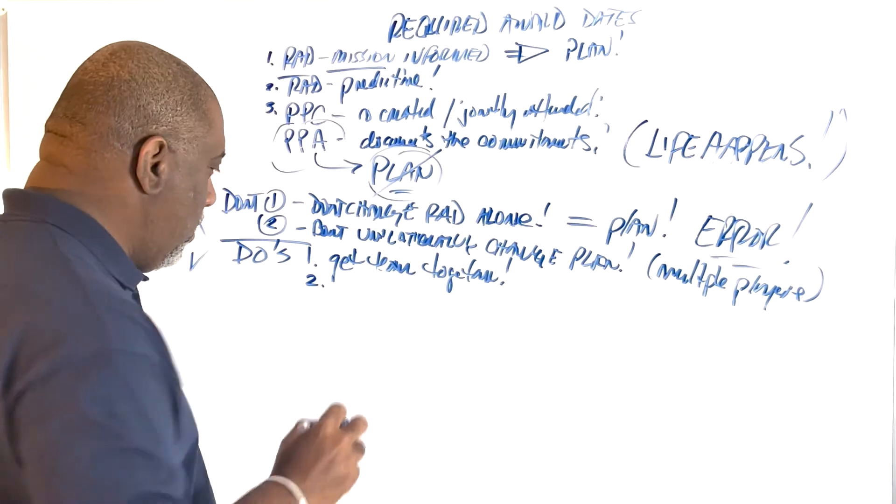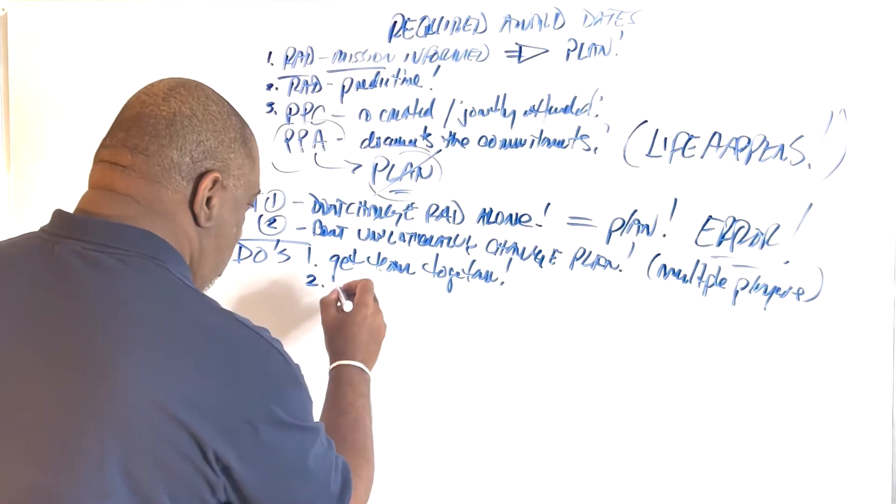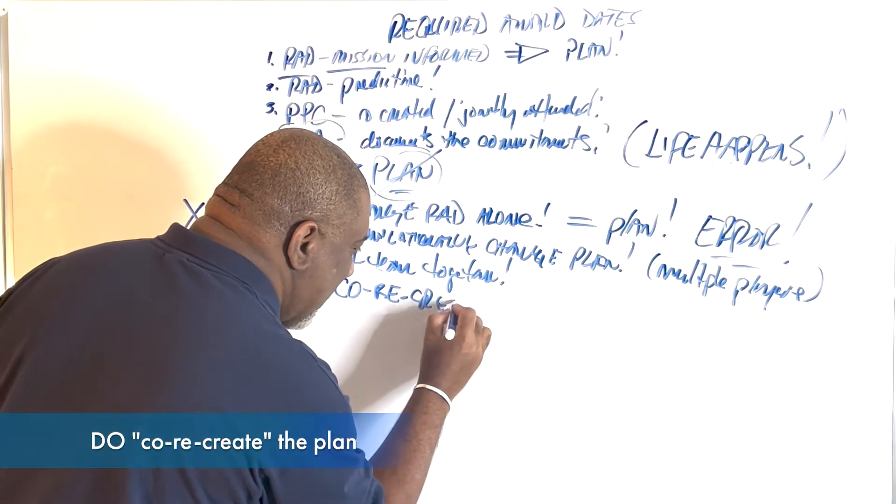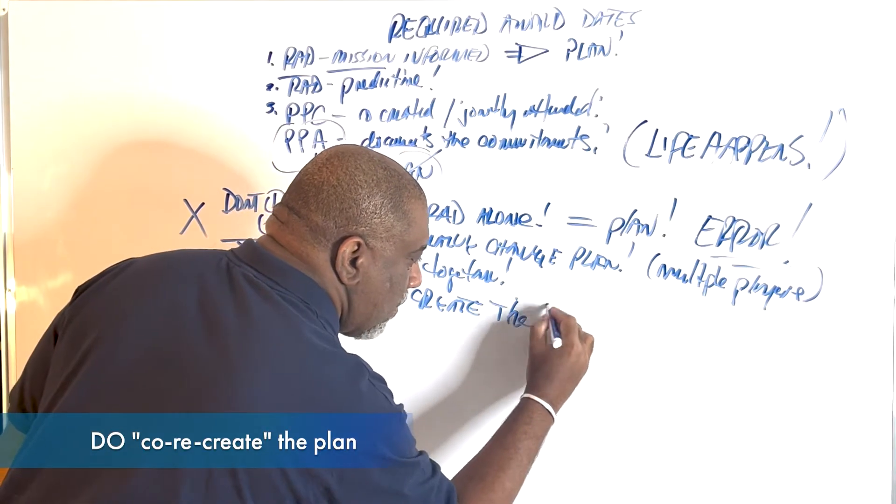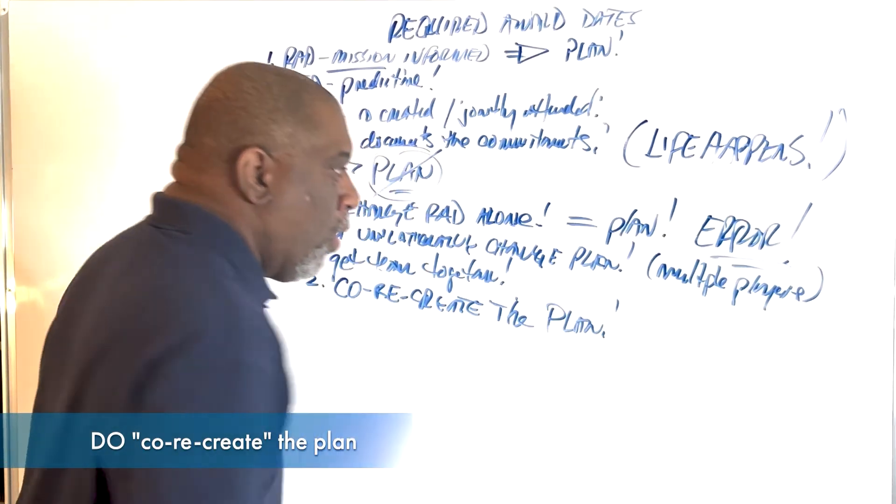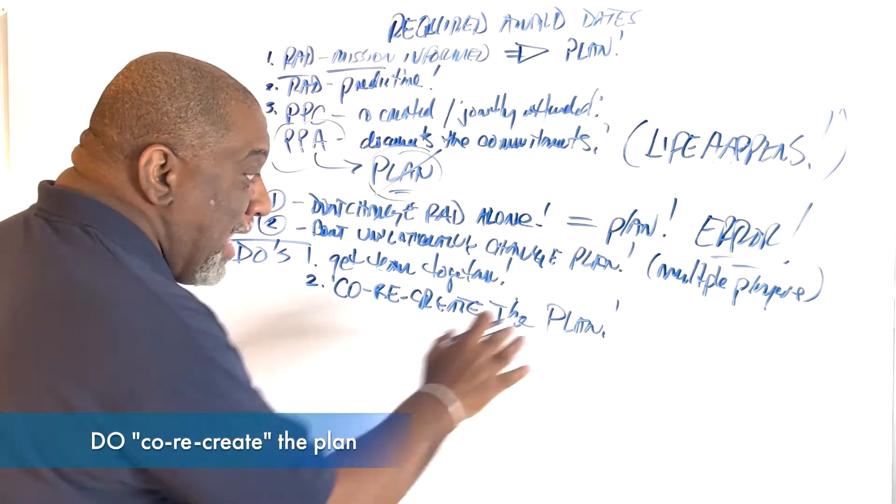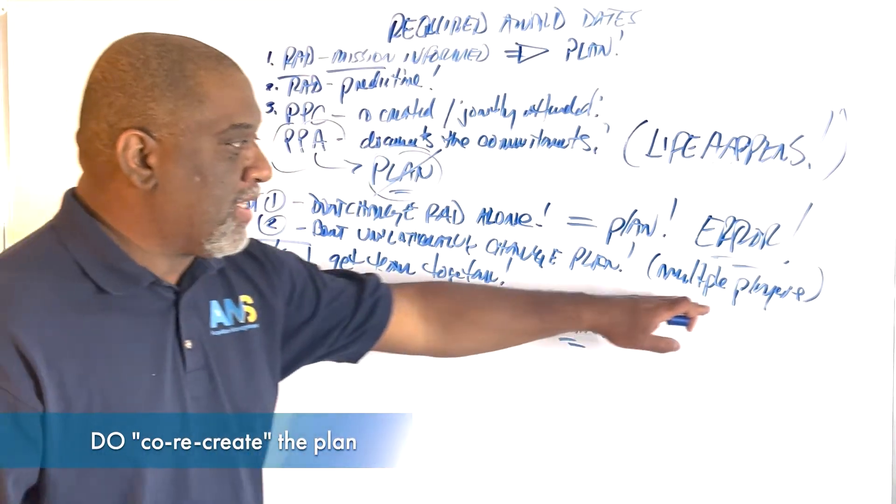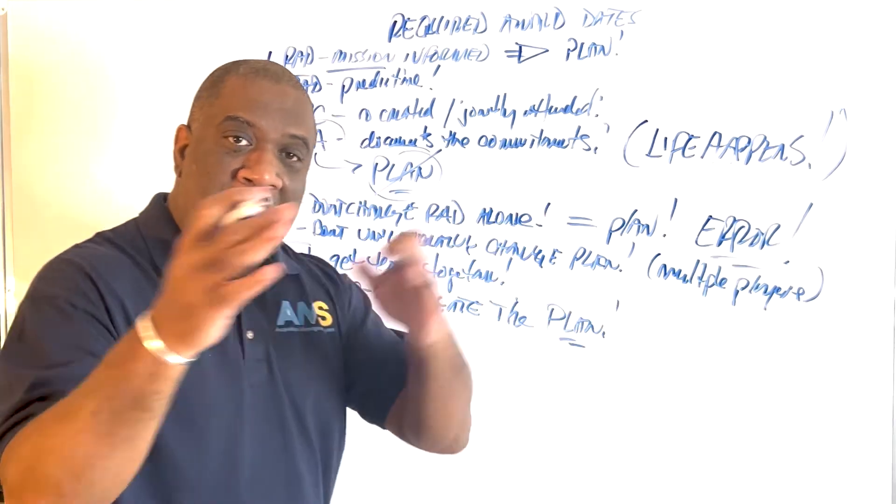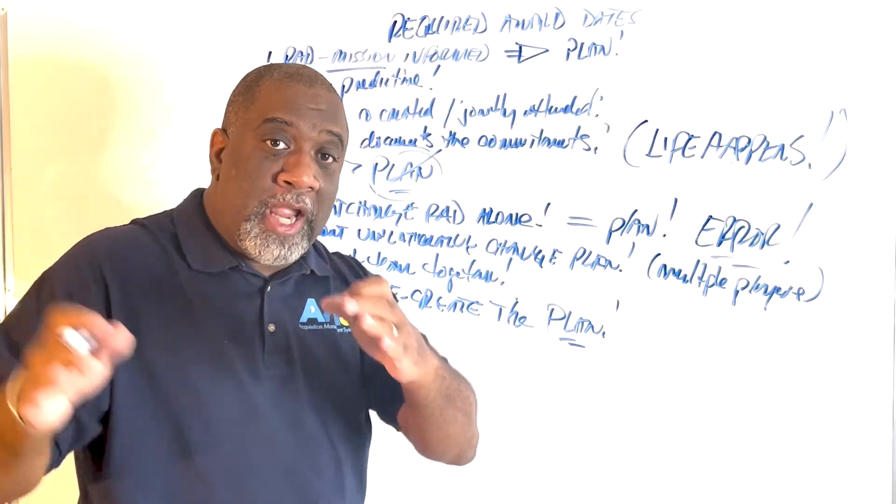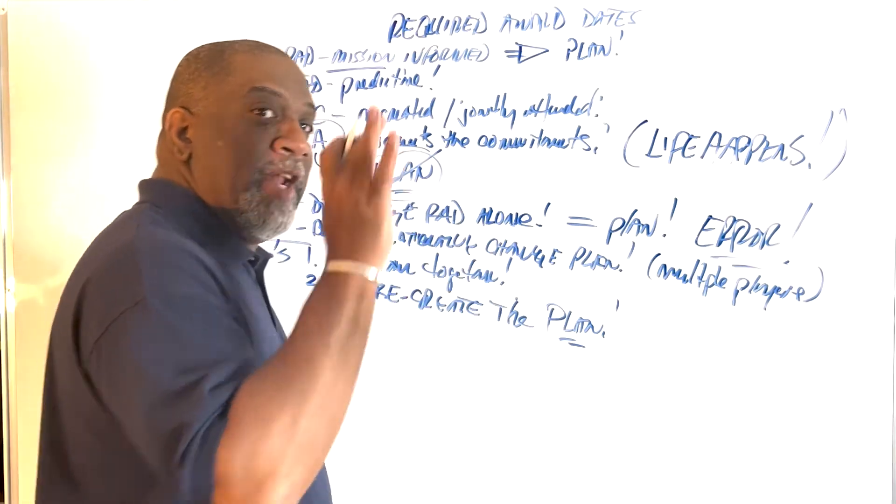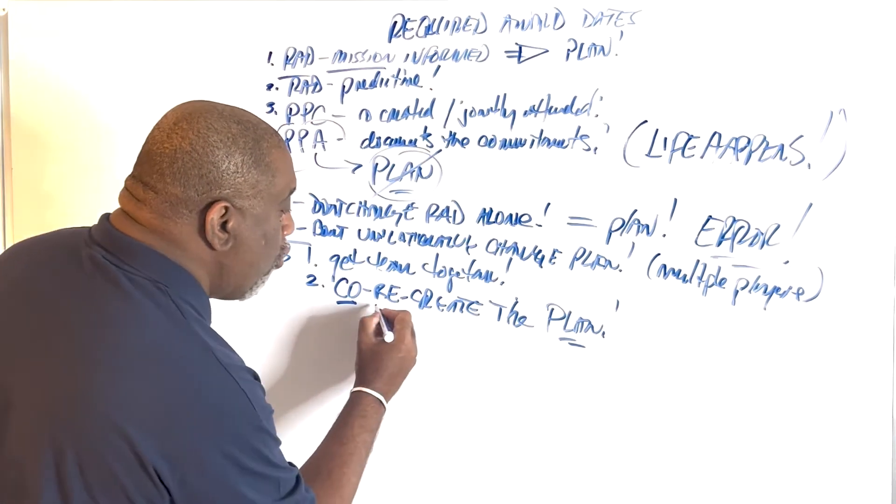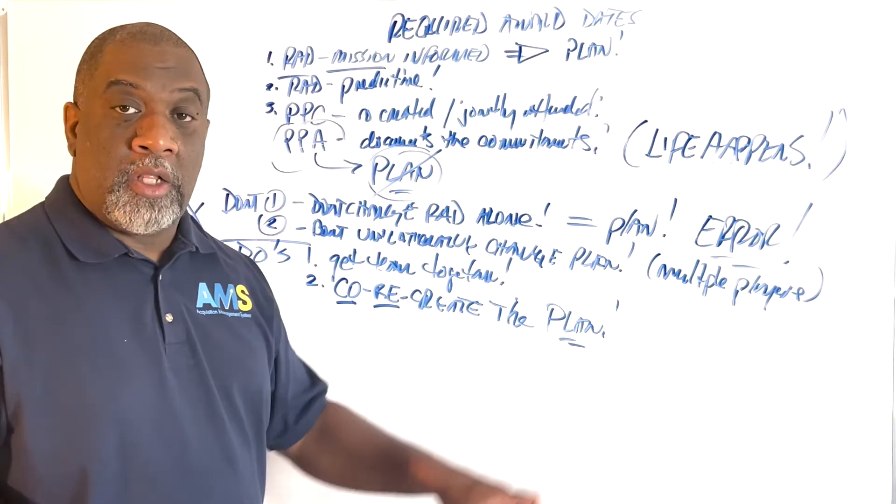Number two, I'm going to create a word for you, co-re-create the plan. Whatever adaptations that need to happen to the plan, because it's multiple players, multiple lines of businesses, multiple functional areas in an acquisition team that are required to effectively execute a plan, you've got to co-re-create the plan.